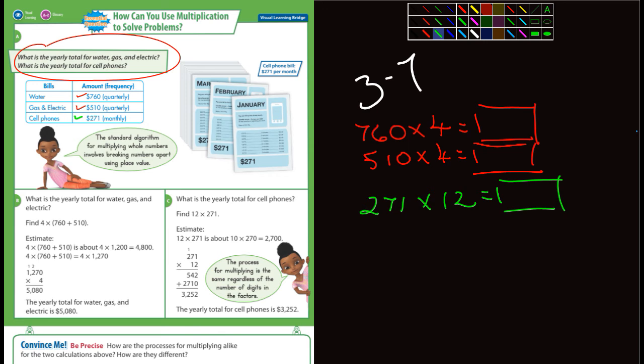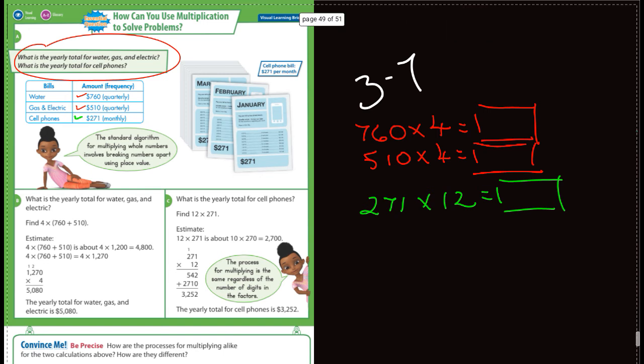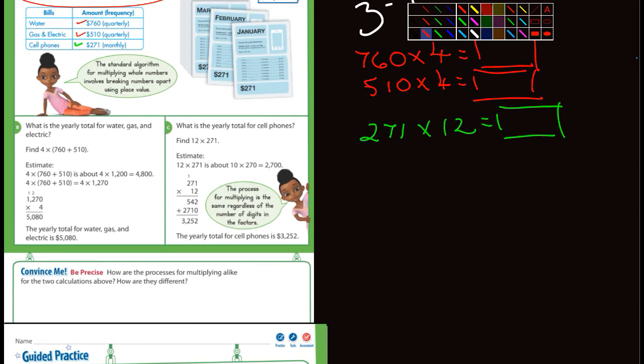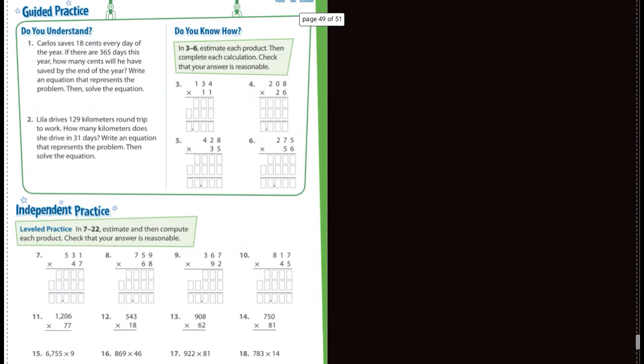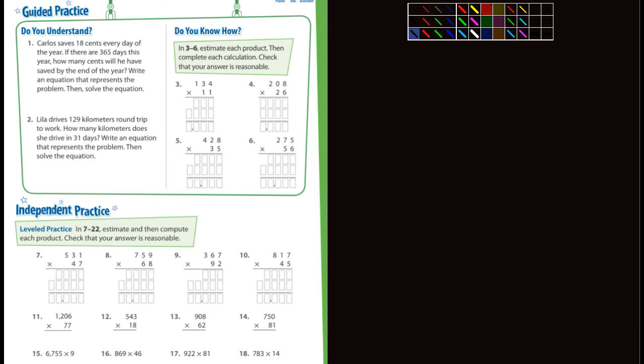You may have a problem very similar to this on the chapter 3 test. They explain the steps here but I'm not really going to concern myself with that. I'm not worried about the convince me. Let's go to the guided practice page. I am not worried about 1 and 2, and I'm not worried about 3, 4, 5, and 6.